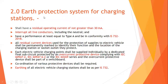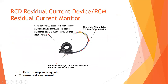Rule 2 covers the earth protection system for EV charging stations. The residual current device shall have a residual operating current of not greater than 30 milliamperes and shall interrupt all live conductors. It shall have performance at least equal to Type A in conformity with IS 72:2015. All residual current devices used for protection of supplies to electric vehicles shall be permanently marked to identify their functions and the location of the charging station or socket outlet.